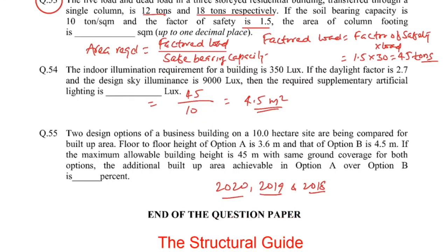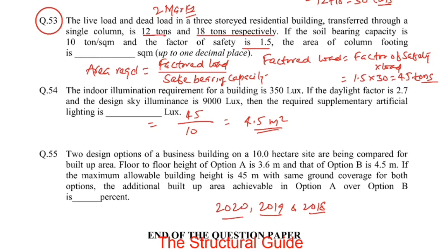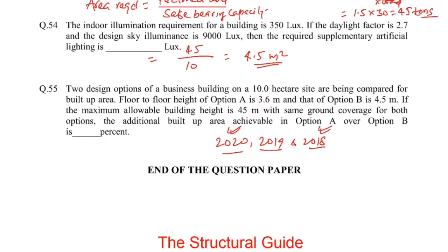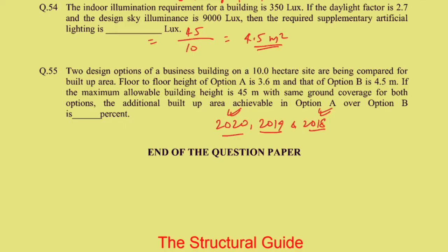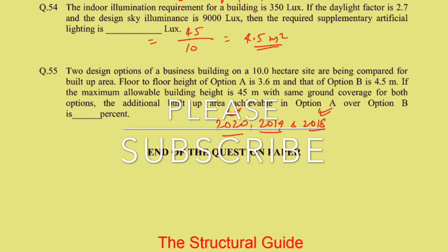Till now I have solved the previous Gate questions from 2020, 2019, and 2018. As you can see, the column footing question appeared in both 2020 and 2018, so it is very important to solve all previous year questions. By solving Gate previous year questions, you can easily get good marks in the Gate exam. If you like this video, please subscribe to the Structural Guide channel and share with your friends. Thank you.